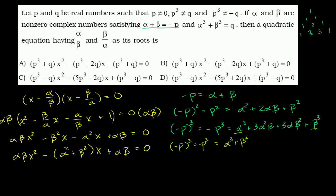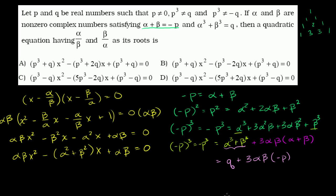Then I can factor out 3 alpha beta from the remaining terms: 3 alpha squared beta plus 3 alpha beta squared becomes 3 alpha beta times (alpha plus beta). So this simplifies to negative p cubed equals q plus 3 alpha beta times (alpha plus beta). And alpha plus beta is negative p, so we have negative p cubed equals q plus 3 alpha beta times negative p.